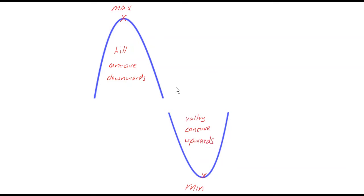The point of inflection is the point on the decreasing part of the function where the graph switches from being concave downwards to being concave upwards. We're going to see how to identify that visually and then how to calculate it algebraically.